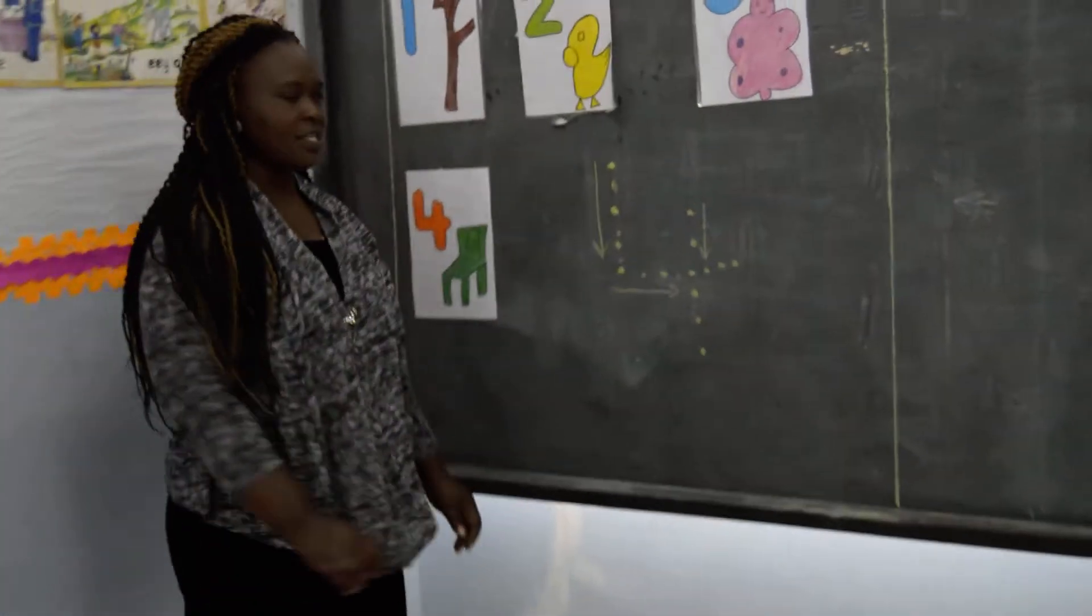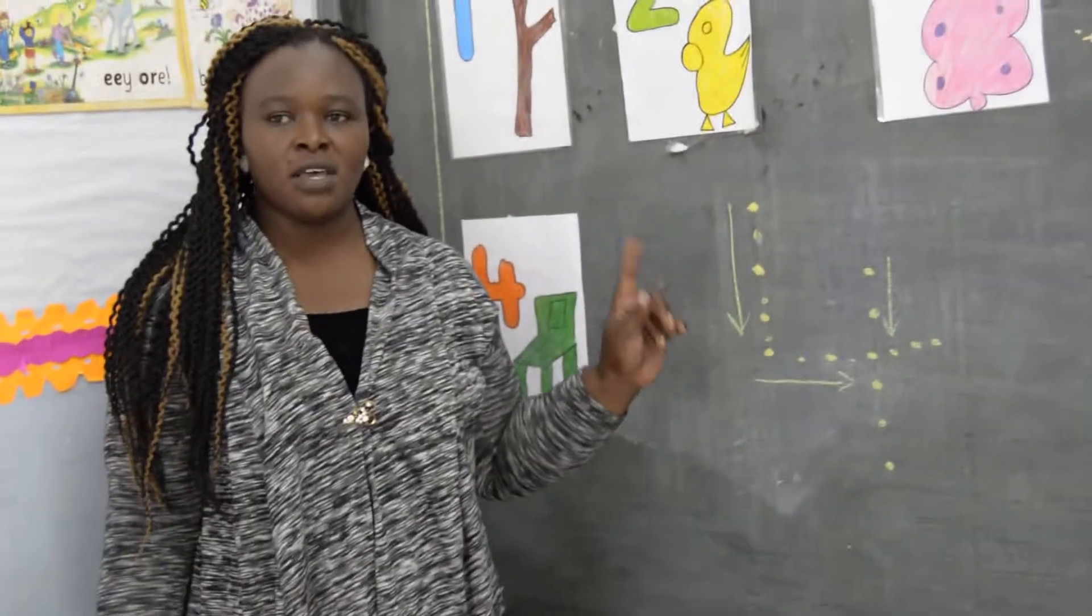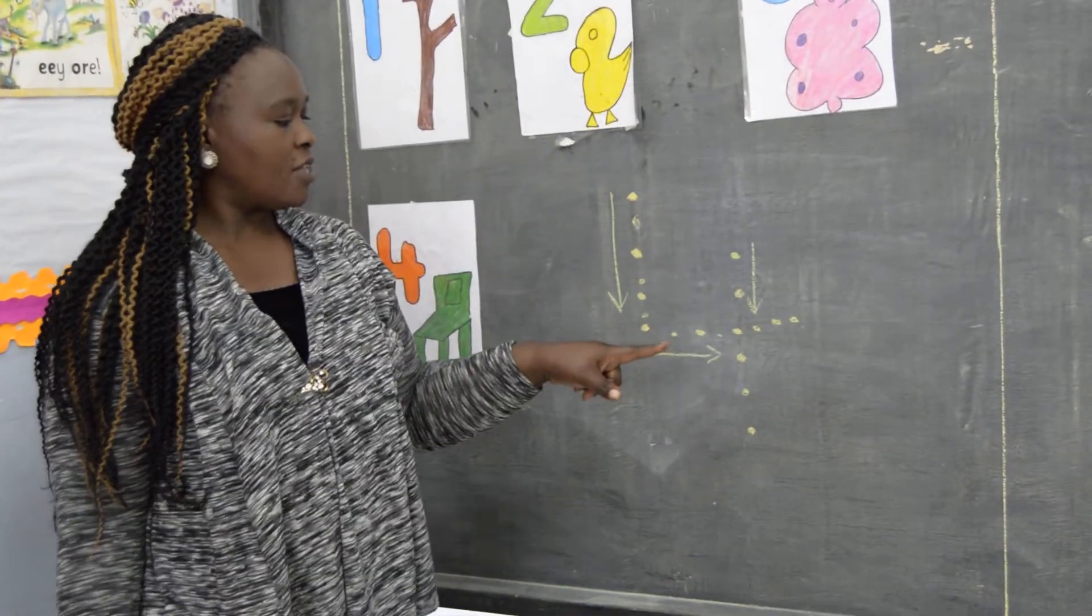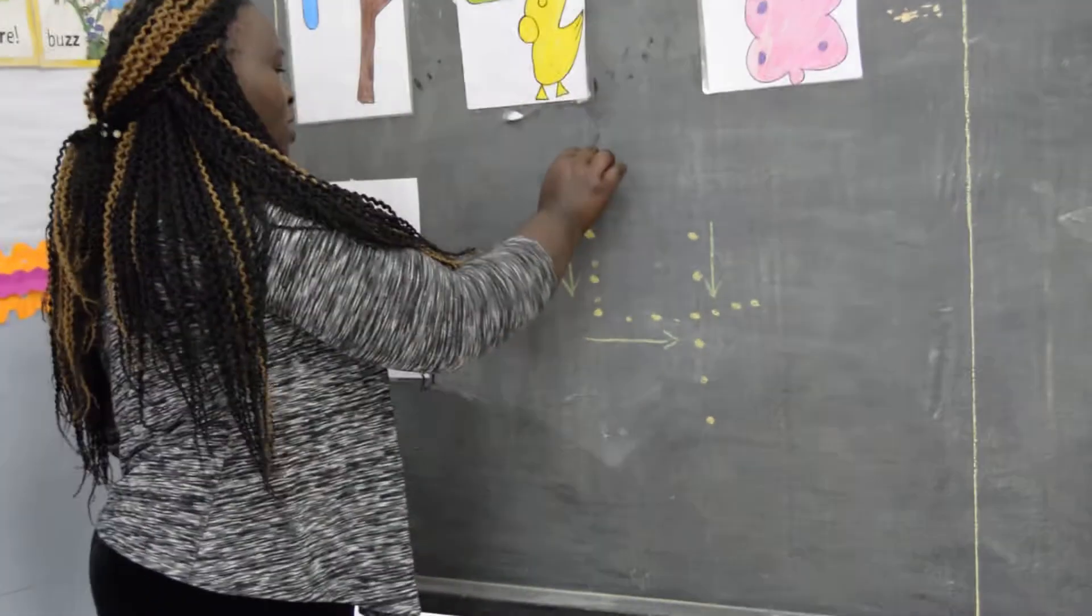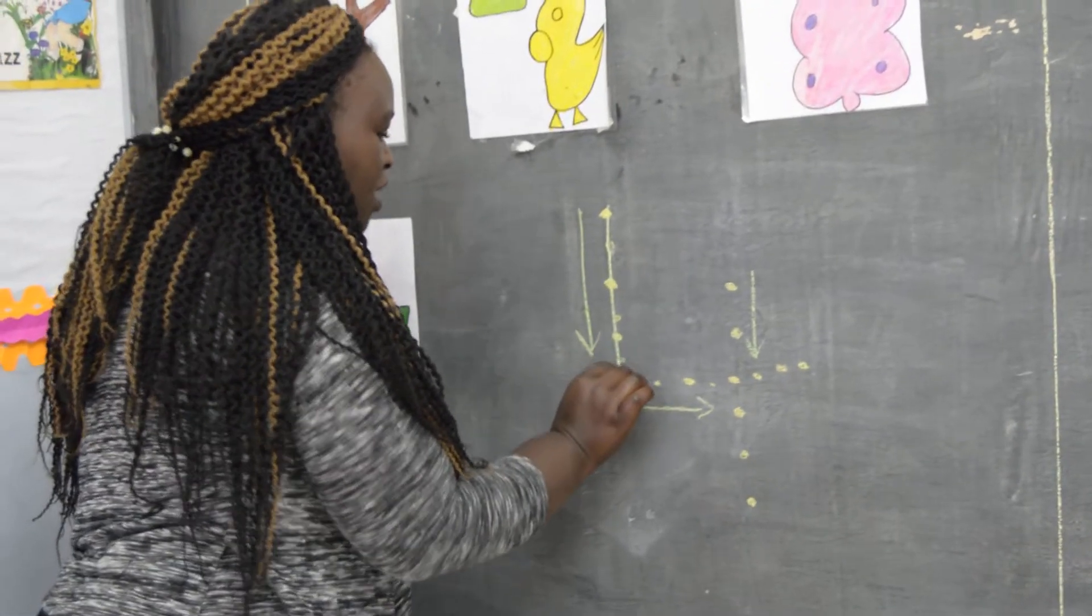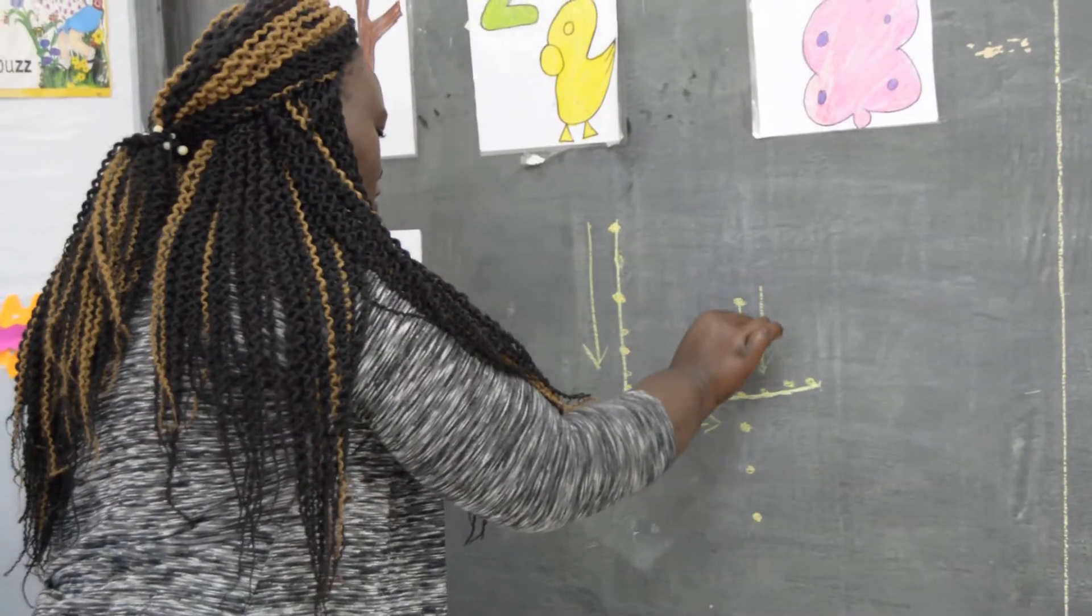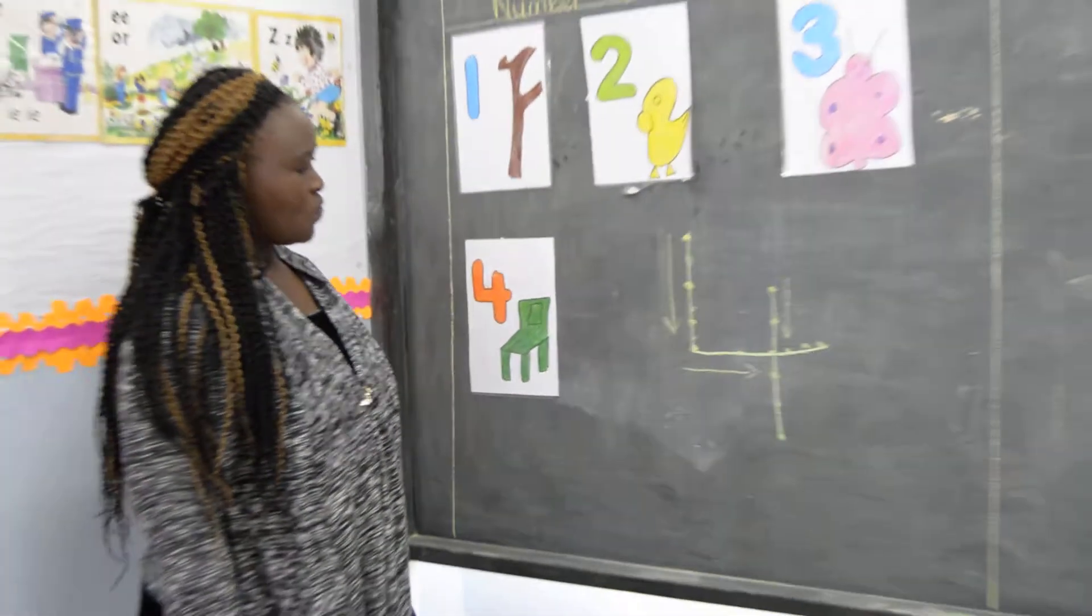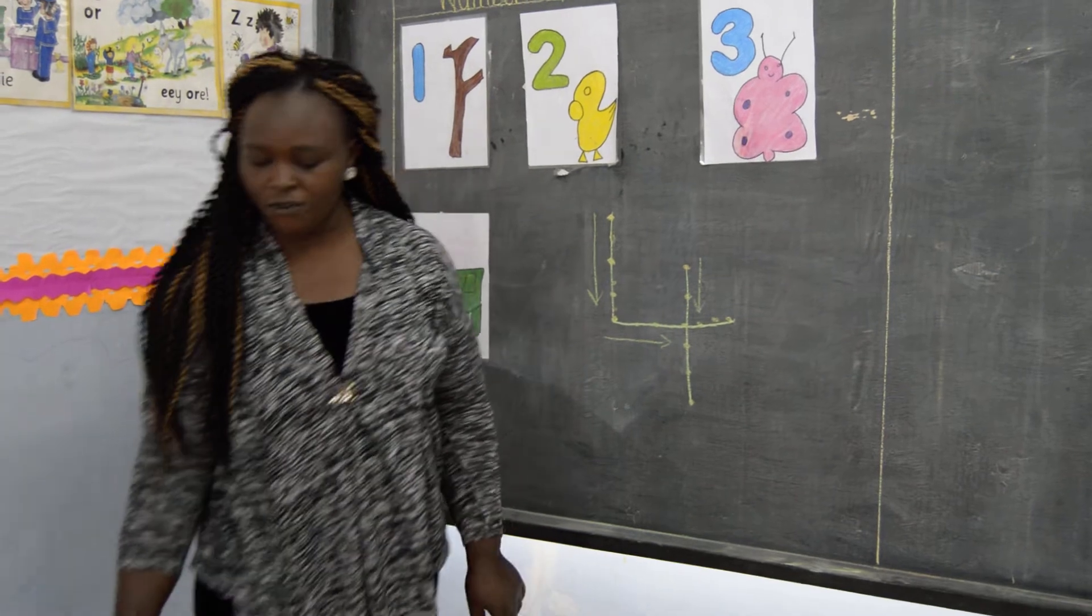Then, our last exercise of the day. We are going to join dots for number four. Remember, we follow the arrows as we join number four. We join like this together. We join like this together. Join, join, join. We join our number four. Very good. You follow the arrows and join number four.